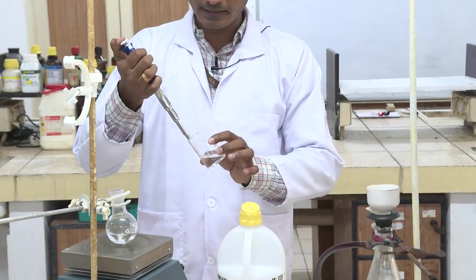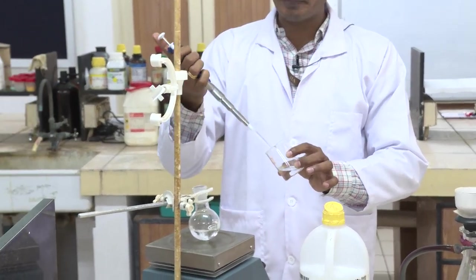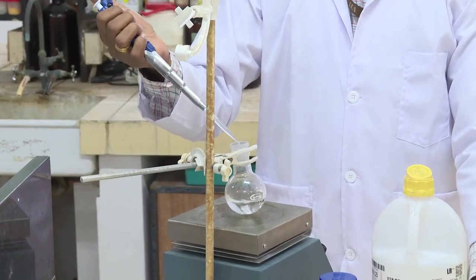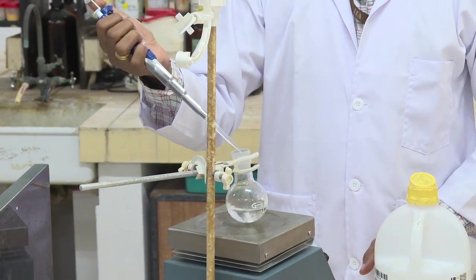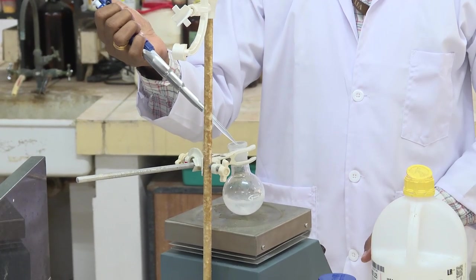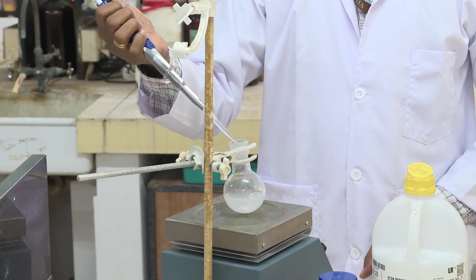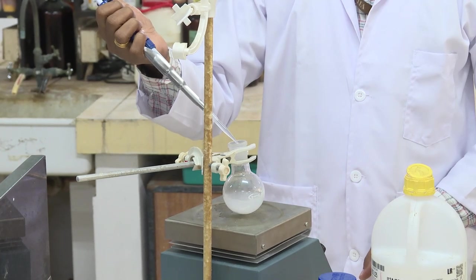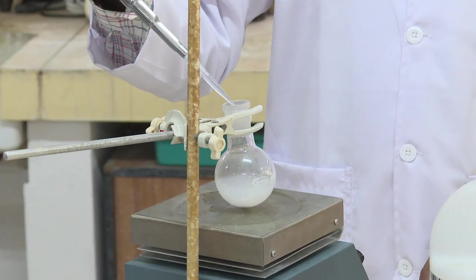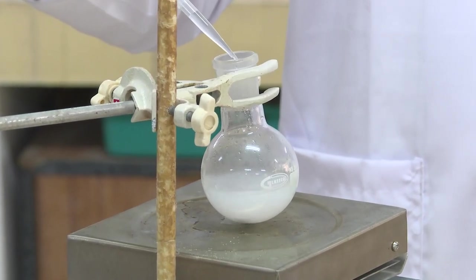Now I am going to add 1.2 ml of aqueous ammonia to this solution dropwise to make sure that it will form a homogeneous colloidal solution. Now you are able to see that a colloidal solution is forming. You can observe that the reaction is so quick.